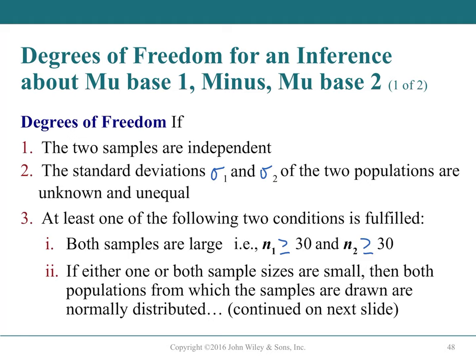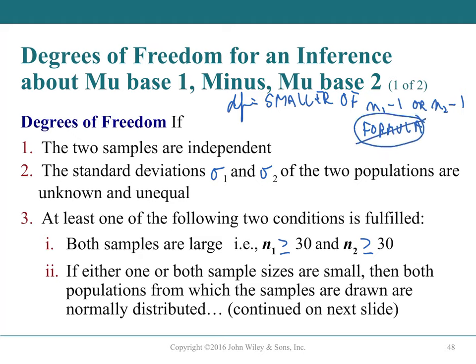Degrees of freedom shortcut (not in the textbook): use the smaller of n₁ - 1 or n₂ - 1. Simply find the smaller sample size and subtract 1—this is a very good approximation. Do not use the complex DF formula; it wastes time. If using a TI-84, the calculator computes DF automatically—show your calculator steps.